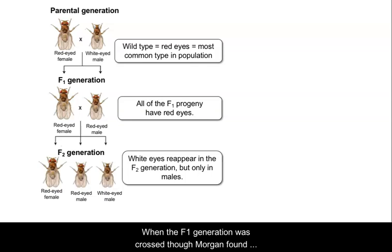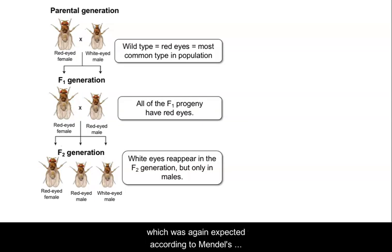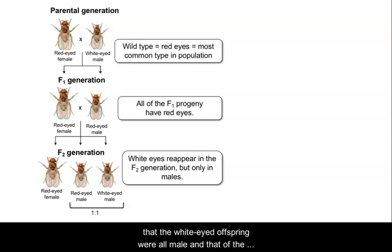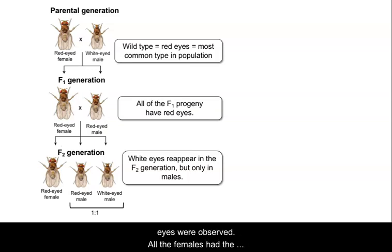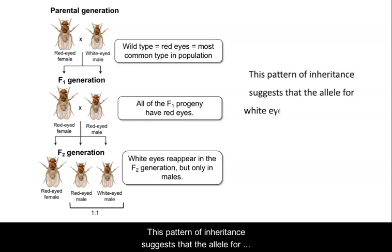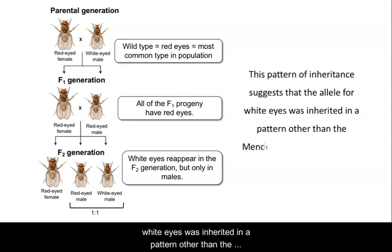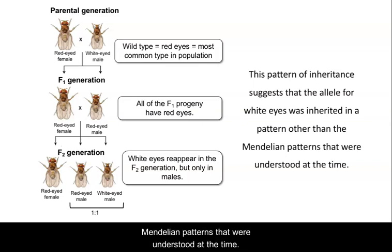When the F1 generation was crossed, Morgan found that the white-eyed flies returned to the population, which was again expected according to Mendel's inheritance patterns. But an unexpected finding was that the white-eyed offspring were all male, and of the males in the F2 generation, half had red eyes and the other half had white eyes. The ratio among males for eye color was 1 to 1, but no females with white eyes were observed — all females had the wild type red eyes. This pattern of inheritance suggested that the allele for white eyes was inherited in a pattern other than the Mendelian patterns understood at the time.